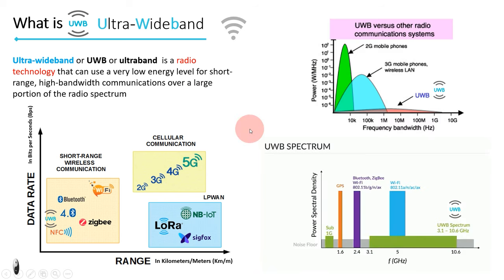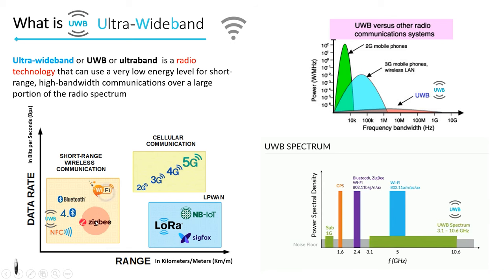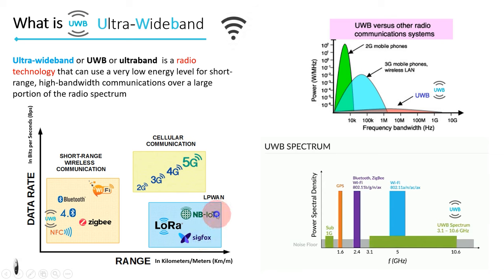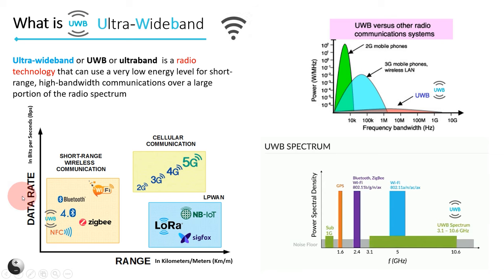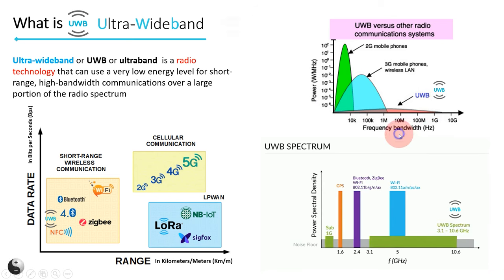Now let's understand ultra-wideband using these images. You can see here in this graph that radio technologies are differentiated using range and data rate. Bluetooth, Wi-Fi, ZigBee, ultra-wideband, and NFC all come in short range. 2G, 3G, 4G, 5G come in long-range cellular communication. LoRa, SigFox, and narrowband come in the LPWAN — low-power wide-area network — category. So UWB technology is very low energy, but at the same time it can send high amounts of data over short distances. In another graph, the power versus bandwidth graph, you can see ultra-wideband has low power but much wider bandwidth compared to other radio communication systems like 2G, 3G mobile phones, and Wi-Fi.